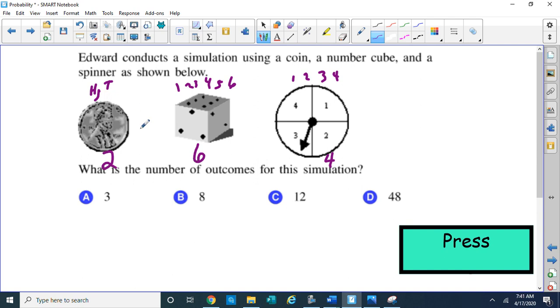So we want to know what's the number of outcomes for this simulation. Well, let's look at the answer choices: 3, 8, 12, and 48. Well, it can't be 3 because if you just toss a dice cube, you've got six different outcomes. So that's not going to be it. Now let's look at 8, though. You've got two different things you can get with a coin. You can get a head or a tail with a coin, and you can get 1, 2, 3, 4, 5, or 6 with a dice cube.